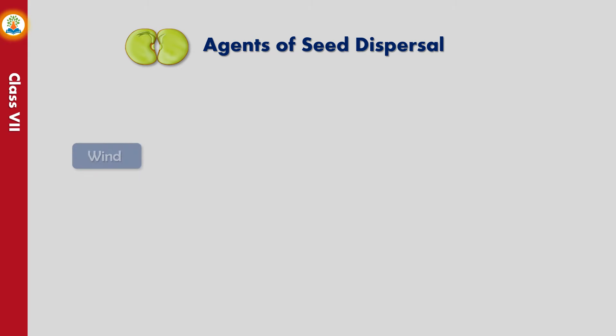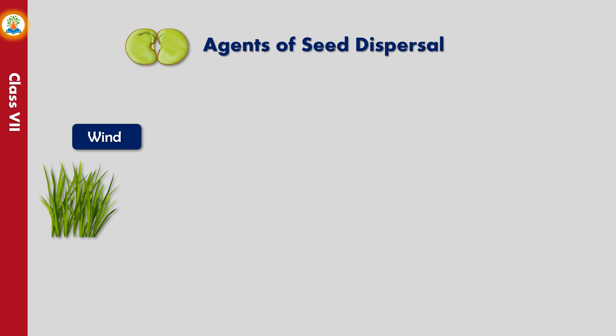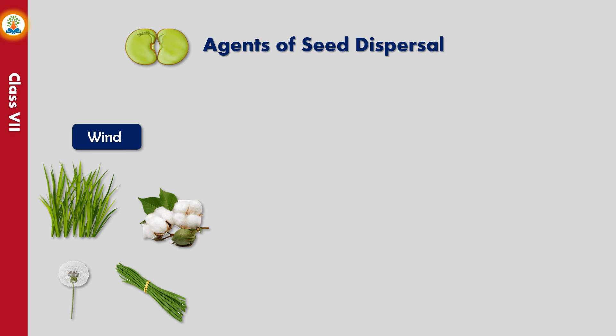Seeds of certain plants adapt certain features such as wings and hair and are lightweight. These seeds are dispersed with the help of wind. Some examples are grass, cotton, dandelions, and drumsticks.